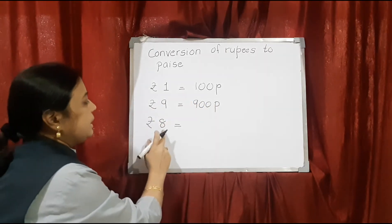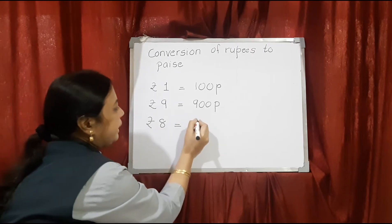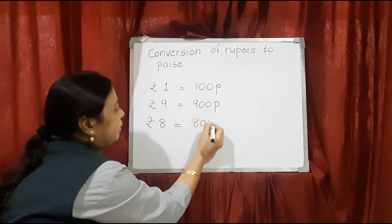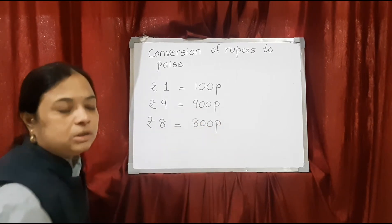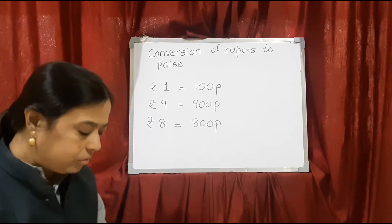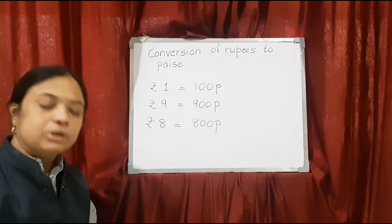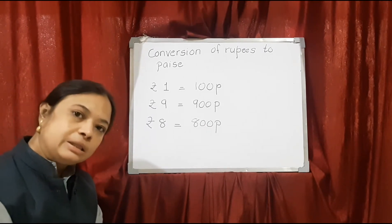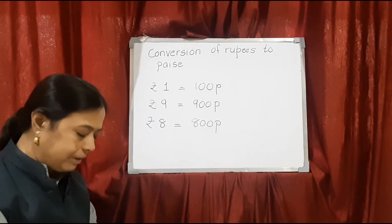Rupees 8 makes 800 paise. So, this is what exercise number 2 on page number 53 is all about.